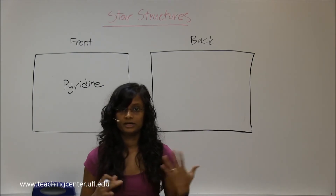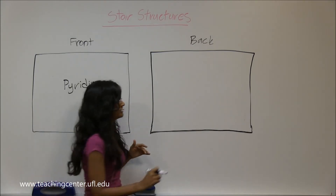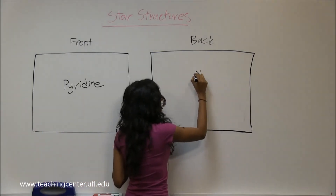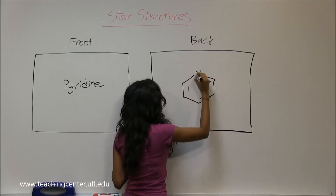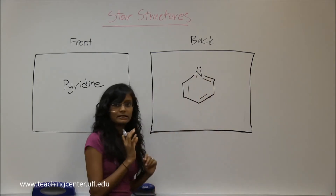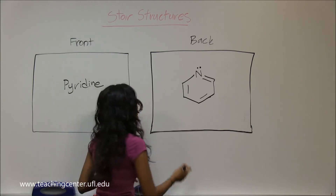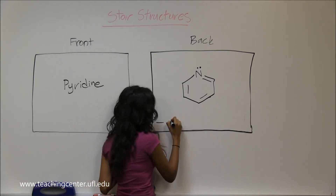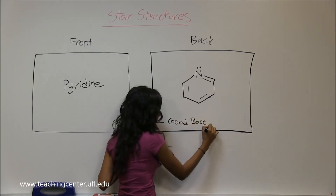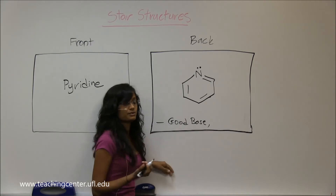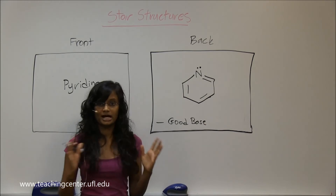Pyridine is what I was talking about in the last video — it absorbs acids, it's a very good base. It looks just like benzene except there is a nitrogen stuck in the middle, and these lone pairs can attack and grab any acid that's been created. So it's usually used where an acid is being created to neutralize the reaction.